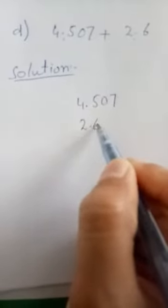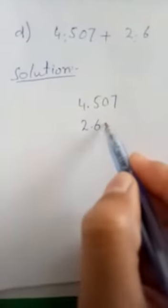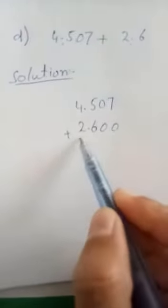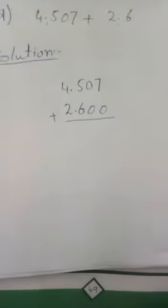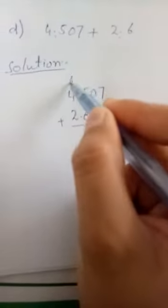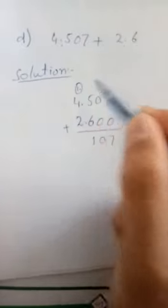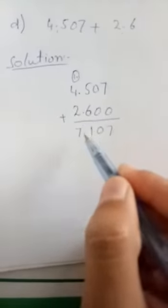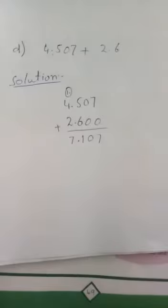4.507 plus 2.6 — since 2.6 has no other digits we fill in zeros: 2.600. Adding: 7 plus 0 is 7, 0 plus 0 is 0, 5 plus 6 is 11, write 1 carry 1, then 4 plus 2 plus 1 is 7. Place the point, giving us the answer 7.107.